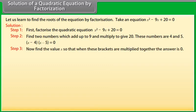Now find the value x so that when these brackets are multiplied together, the answer is 0. This means either (x - 4) = 0 or (x - 5) = 0. So, x = 4 or x = 5.